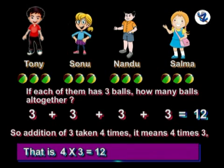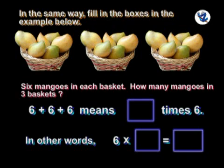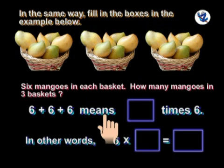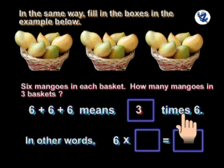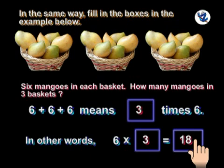That is 4 multiplied by 3, which is equal to 12, because 4 threes are 12. Now look here: 6 mangoes in each basket. How many mangoes in 3 baskets? 6 plus 6 plus 6 means 3 times 6. In other words, 6 into 3 is equal to 18.